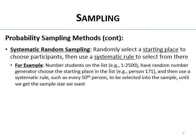For example, you're picking Alliant students from a list numbered 1 to 2,500. A random number generator chooses a starting place — say, person 171. That person is in your sample, and then you use a rule: every 50th person after this random start is included until you reach your needed sample size. Starting at a random place and then using a systematic rule is called systematic random sampling.